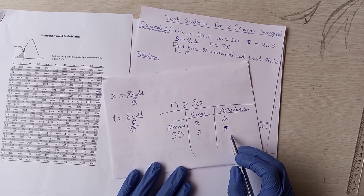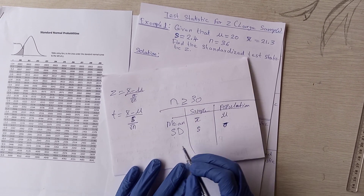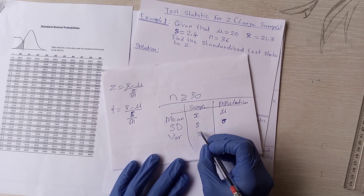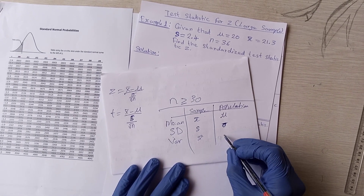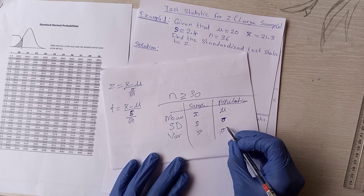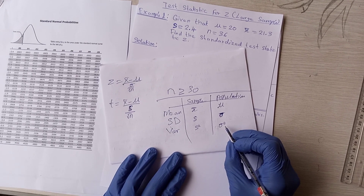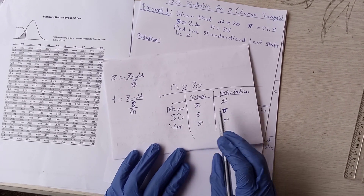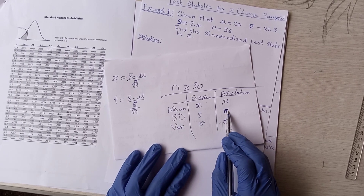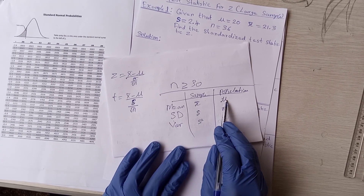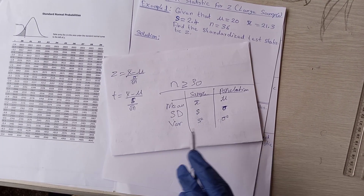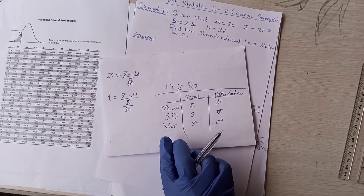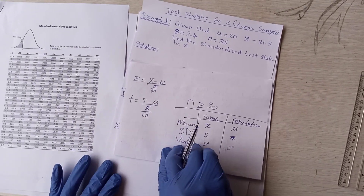For variance, we use small s-squared to represent sample variance, and sigma-squared (σ²) to represent population variance. It's important to know what letters represent: sample variance, population variance, sample standard deviation, population standard deviation, sample mean, and population mean.